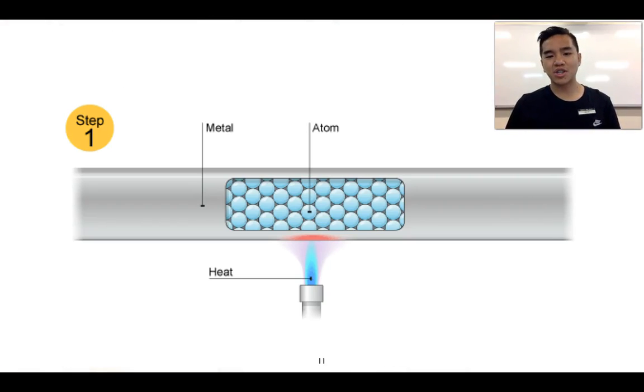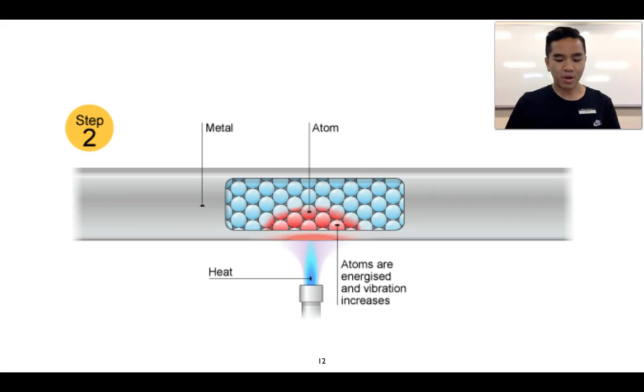I've got a series of diagrams that show you how a metal can actually conduct heat relatively well. You can see the atoms that make up the metal here, and they're arranged in this repeating structure. We supply heat to a section of our metal, and we're going to get the atoms closest to the heat source becoming excited.